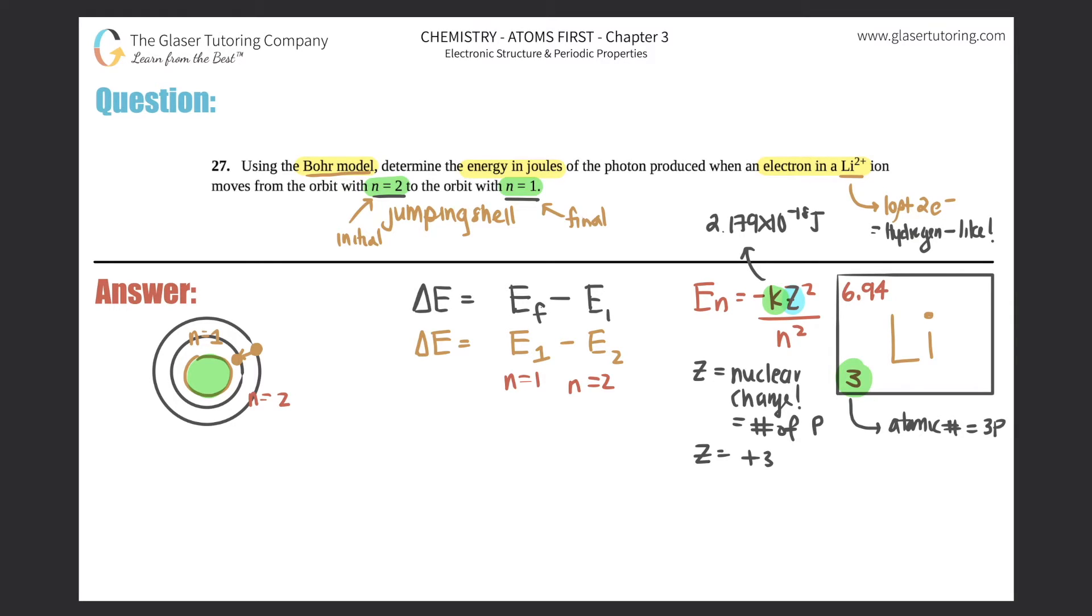The z is the nuclear charge. So we should find out what the z is for lithium. The nuclear charge is always going to be the charge of the nucleus. And the nucleus is made up of protons and neutrons. The neutrons have no charge. So the nuclear charge is just the same thing as the number of protons.